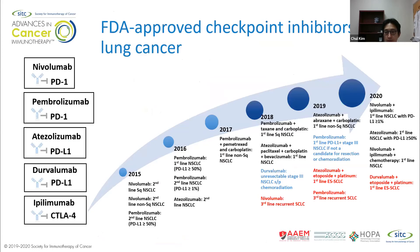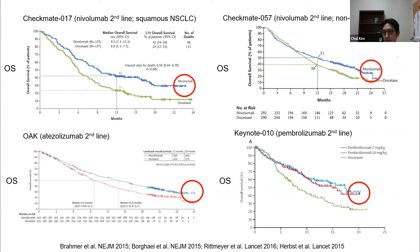The FDA-approved checkpoint inhibitors in lung cancer have been expanding every year — monotherapy immunotherapy, or in combination with chemotherapy, or combinations of PD-1 and CTLA-4 therapy. The first immunotherapy trials in lung cancer compared drugs like nivolumab, atezolizumab, and pembrolizumab with the then-standard-of-care taxol chemotherapy, and all showed improvement in overall survival. If you look at the tail of the curve, about 15–20% of patients don't experience death or progression — a fraction of patients can really enjoy a durable response from immunotherapy.